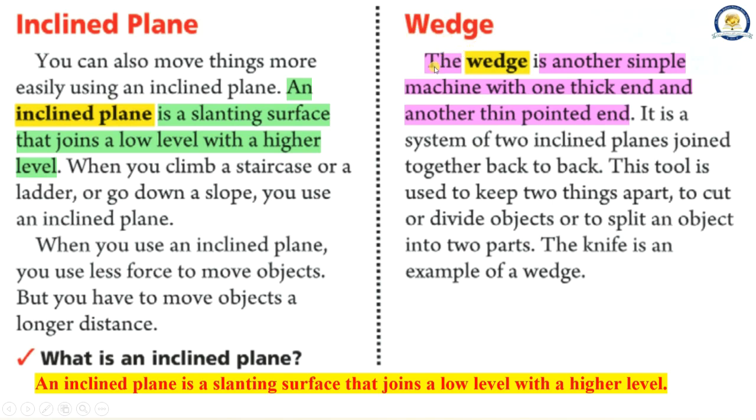Wedge. The wedge is another simple machine with one thick end and another thin pointed end. It is a system of two inclined planes joined together back to back. This tool is used to keep two things apart, to cut or divide objects or to split an object into two parts. The knife is an example of a wedge.